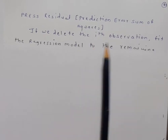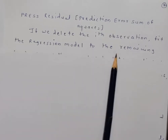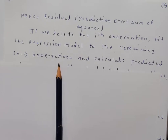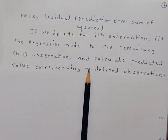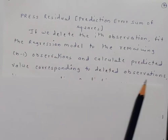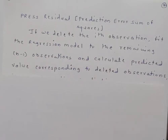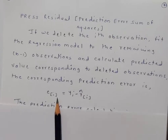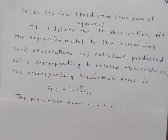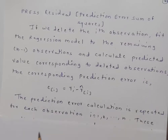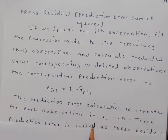The procedure is: if we delete the i-th observation and fit the regression model to the remaining n−1 observations, we can calculate the predicted value corresponding to the deleted observation. The corresponding prediction error is e(i) = yi − ŷ(i). This prediction error calculation is repeated for each observation, i varying from 1 to n.